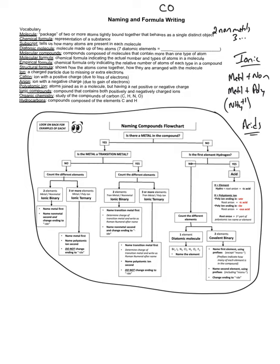An easy way to remember the seven diatomic elements is a mnemonic called HOFBrINCl. These seven elements are: hydrogen, oxygen, fluorine, bromine, iodine, nitrogen, and chlorine. Usually when you have an element in a chemical reaction it is monatomic, but if it's one of these seven elements then it is diatomic.